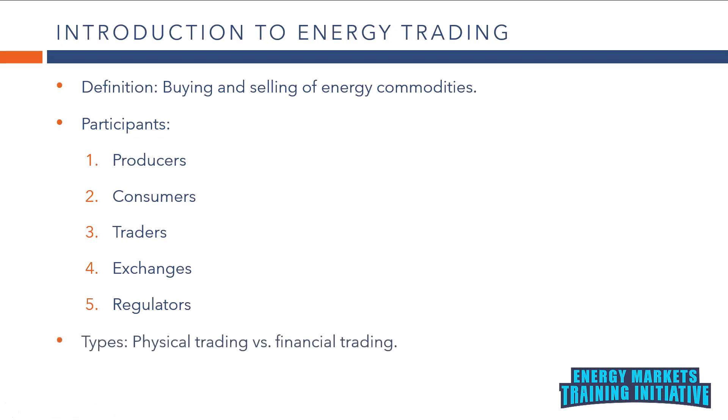Types of energy trading. Physical trading involves the actual delivery of energy commodities. Participants arrange for the transportation, storage, and delivery of the physical commodity. Financial trading involves trading contracts based on the future price of energy commodities. These contracts are settled in cash without physical delivery. Financial traders aim to profit from changes in the price of energy commodities over time.